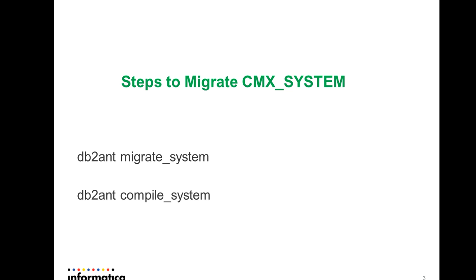To migrate the CMX system it will involve two processes. One is migrate system and the other one is compile system. The migrate system will migrate the code from DB2 9.0.1 to DB2 9.0.2, and compile system will compile all the packages and objects residing in DB2 9.0.2.